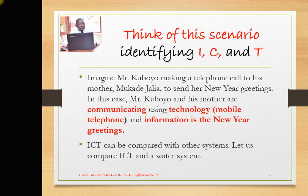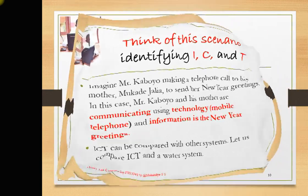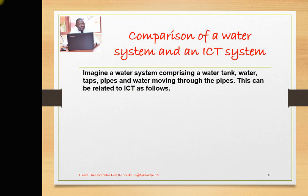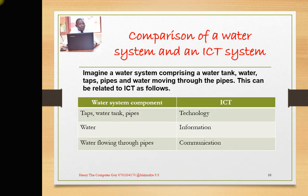They are telling us that ICT can be compared with other systems. Let us compare ICT and a water system. Imagine a water system comprising of water tanks, water, taps, pipes, and water moving through the pipes. This can be related to ICT as follows. Remember, when something is physical, it is hardware.